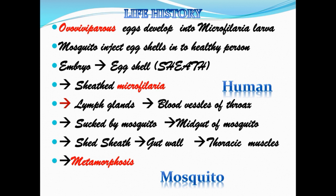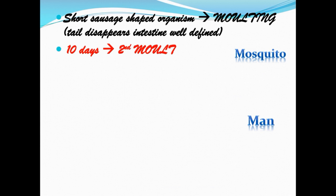The larva enters the gut wall and into the thoracic muscles, where it undergoes the process of metamorphosis. This is how the infective stage is injected by the mosquito to the human being. After metamorphosis, a short sausage-shaped organism is formed, which undergoes molting, the tail disappears, and the intestine becomes well defined.